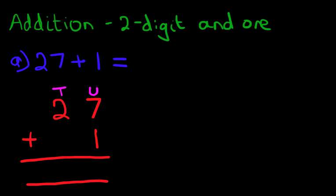When using the vertical format, we add the numbers column by column. We always start with the column on the right-hand side first — the units column. What is 7 plus 1? That's nice and easy. That is 8.